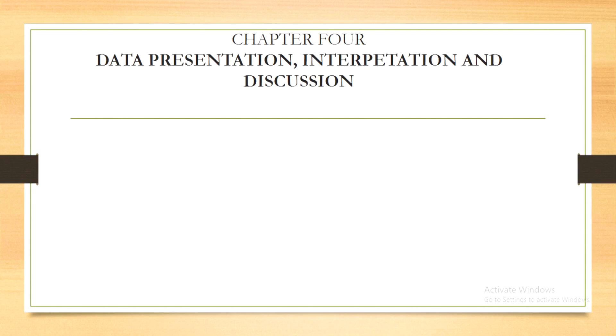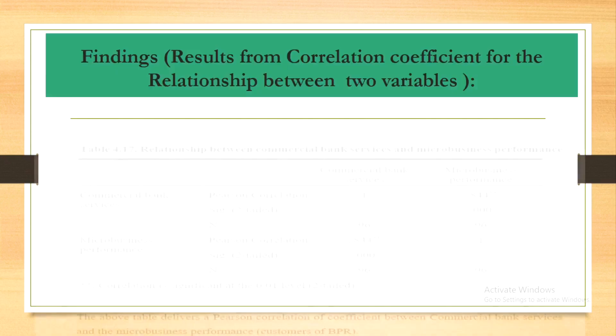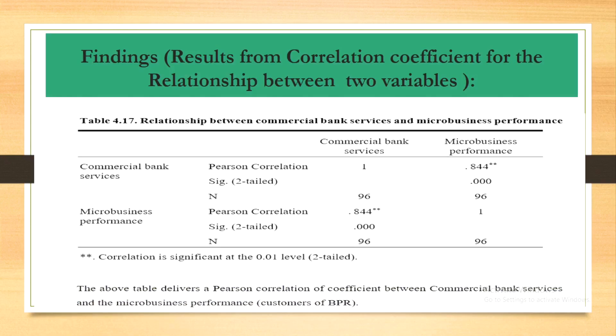This is the technique I used when collecting data. In chapter four, we try to present, interpret, and make discussions about data. That's where we use descriptive for quantitative data, determining frequency and percentage. We also use correlation for determining the relationship — to what extent the independent variable is affecting the dependent variables — that is, commercial bank services and the performance of microbusiness.